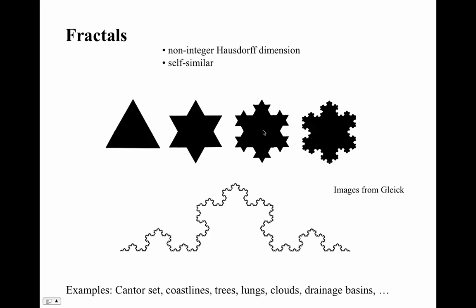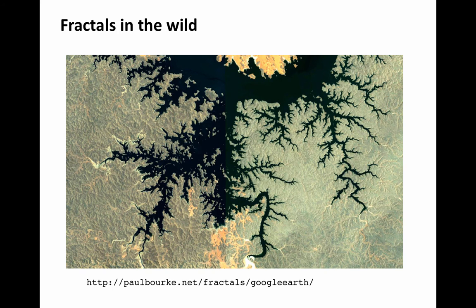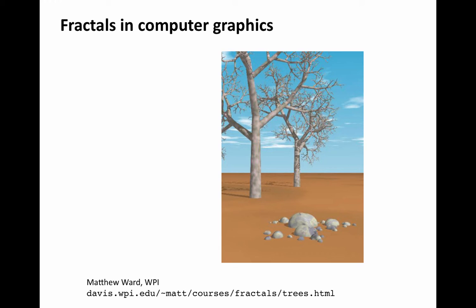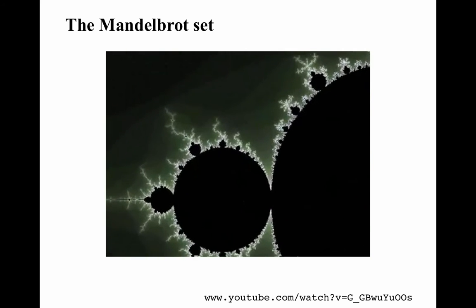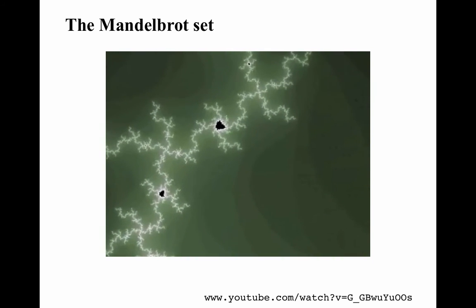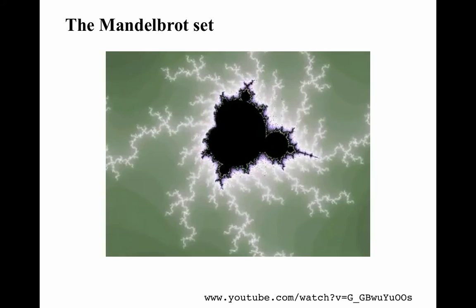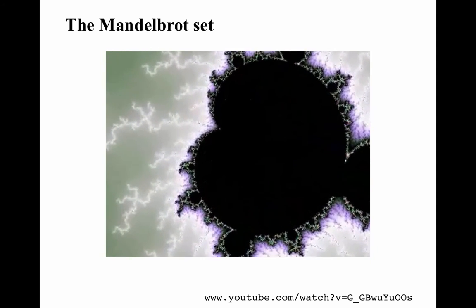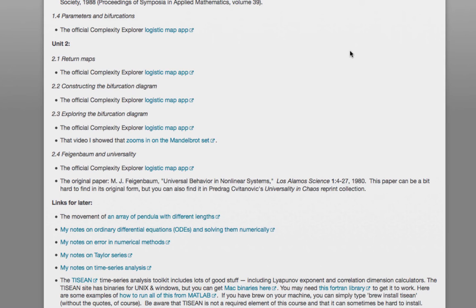Fractals play an interesting role in mathematics, and there are also lots of examples of fractal-like structures in nature. Here's a beautiful fractal called the Mandelbrot set — this video shows that if you zoom in on the Mandelbrot set, you keep seeing more and more self-similar structure. There's a whole new Mandelbrot set way down in the tendrils of the old one. I've included a link to that video on the supplementary materials section of the Complexity Explorer website for this course, under the section for this segment.